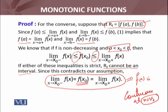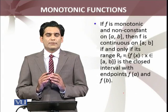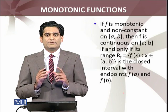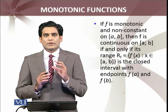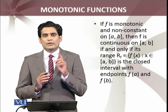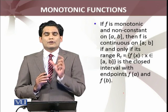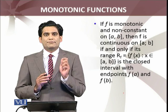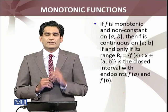Since x₀ is an interior point of (a, b), and we established right-continuity at a and left-continuity at b, we have therefore proved that f is continuous at x₀. We can now conclude that f is continuous on the closed interval [a, b]. We have proved the very important result: if f is monotonic and non-constant on a closed interval, then f is continuous if and only if the range of f is the closed interval with endpoints f(a) and f(b).